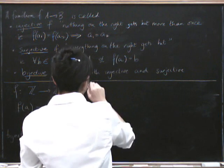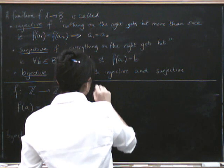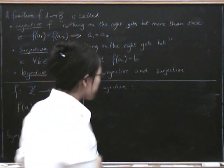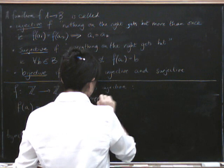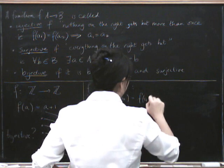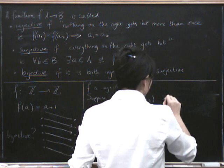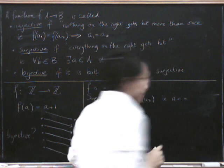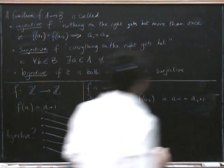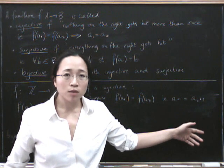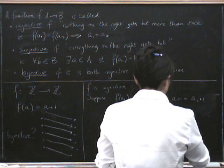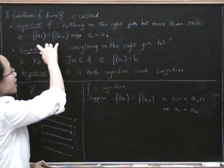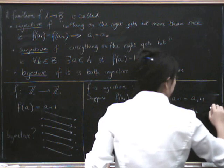So let's first of all show that F is injective. What we have to do is suppose that F of A1 equals F of A2. What does that actually mean? F of A1 is A1 plus 1, and F of A2 is A2 plus 1. But if A1 plus 1 equals A2 plus 1, we can take 1 away from both sides, and that gives us that A1 equals A2. This is exactly what we had to show — we had to suppose F of A1 equals F of A2 and show that it implied A1 equals A2, and that's exactly what we've done. So it's true.